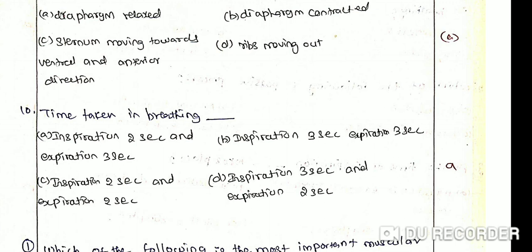Time taken in breathing: Option A: Inspiration 2 seconds, Expiration 3 seconds. Option B: Inspiration 3 seconds, Expiration 3 seconds. Option C: Inspiration 2 seconds, Expiration 2 seconds. Option D: Inspiration 3 seconds, Expiration 2 seconds. The correct answer is Option A: Inspiration 2 seconds and Expiration 3 seconds. Inspiration takes about 2 seconds and expiration takes about 3 seconds under normal conditions. On average, an adult human breathes about 16 times per minute.